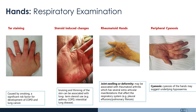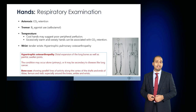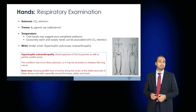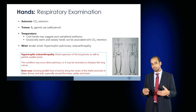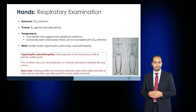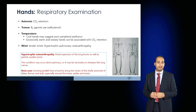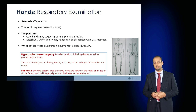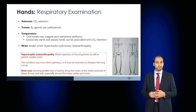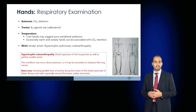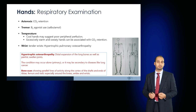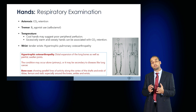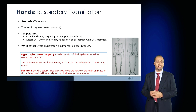Observe whether the patient is peripherally cyanosed, which may suggest hypoxaemia. Ask the patient to extend their hands and observe for asterixis — CO2 retention can result in this negative myoclonus seen as a flap. They may also have a fine tremor as a result of using beta agonists such as salbutamol. Assess the temperature of the hands: cool hands may suggest poor circulation, while excessively warm and sweaty hands may be the result of CO2 retention causing peripheral vasodilatation.